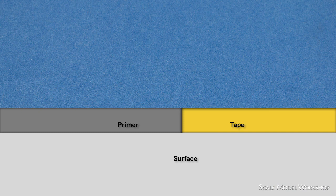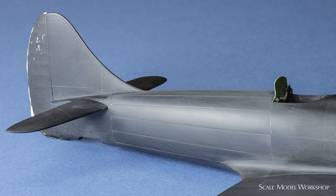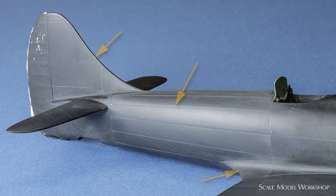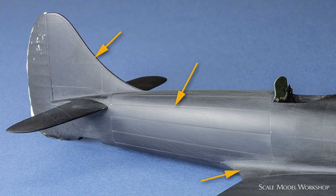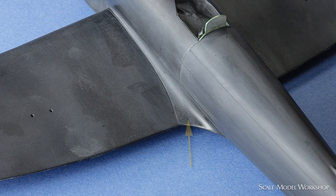The first utilized the more common method that relies on the buildup of thicknesses of lacquer primer. Here I used this technique to simulate the overlap joints on the rear fuselage of this 32nd scale Hawker Tempest, as well as the wing root area.